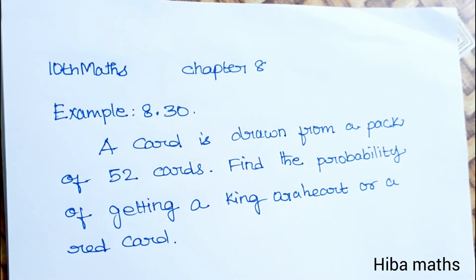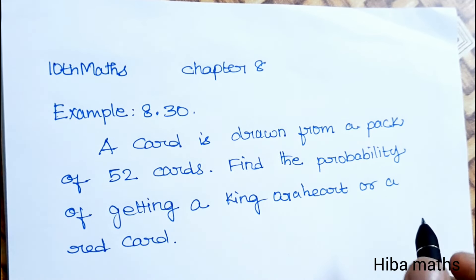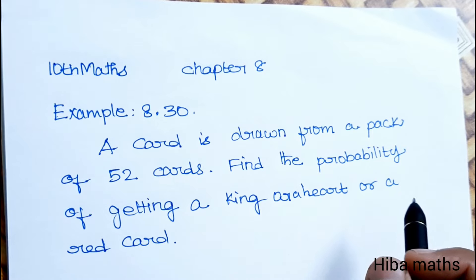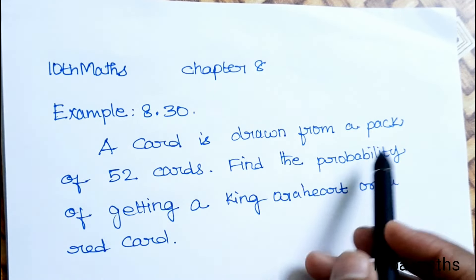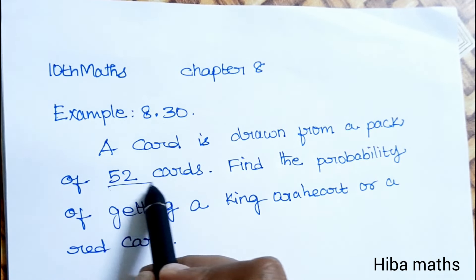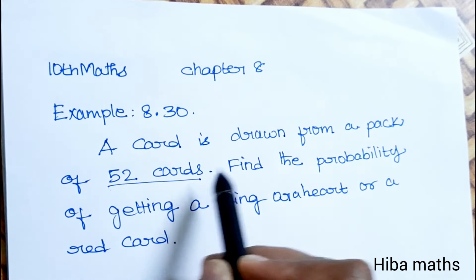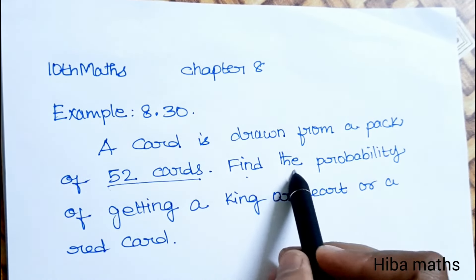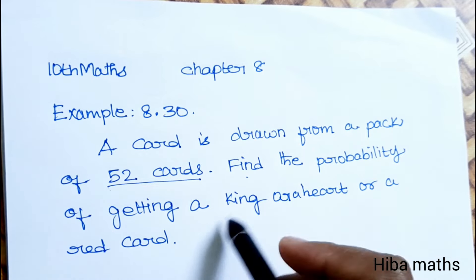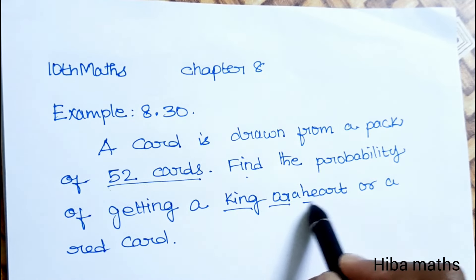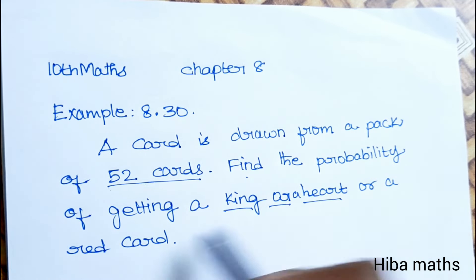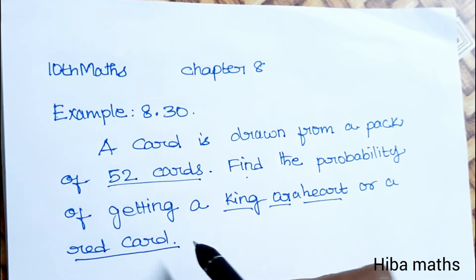Hello students, welcome to Hibamax 10 Standard Max Chapter 8, Example 8.30. A card is drawn from a pack of 52 cards. Find the probability of getting a king or a heart or a red card.